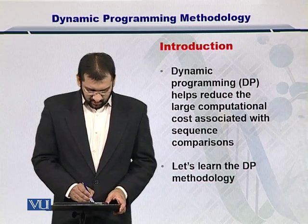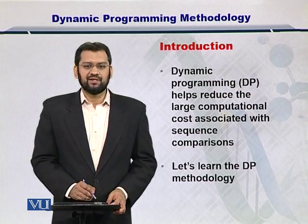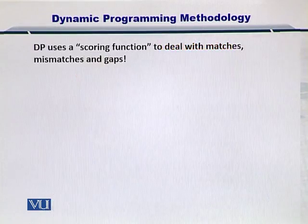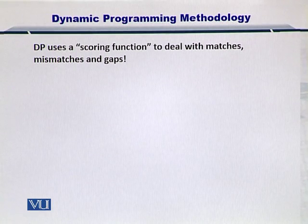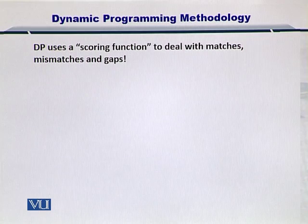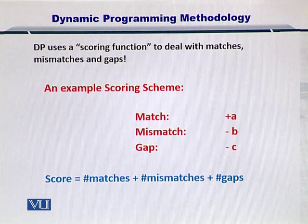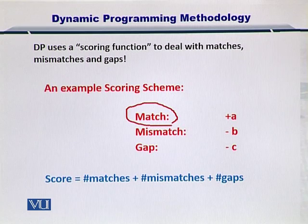So let's see how dynamic programming, or simply DP, works. DP is based on a scoring function. What are the elements in the scoring function and what are the possibilities it can score? There are three possibilities.